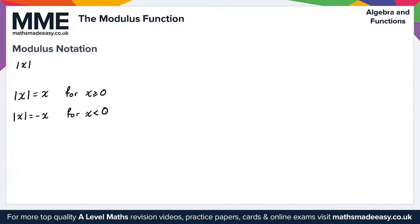Functions also have a modulus. For example, if f(x) equals minus two, then the modulus of f(x) is equal to two. The modulus of f(x) is equal to f(x) when f(x) is greater than or equal to zero.